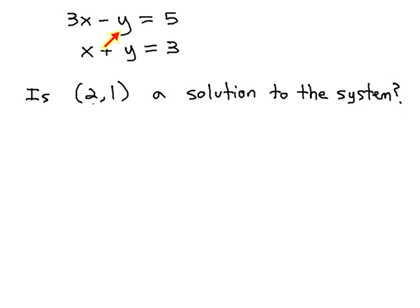So for example, if we wanted to see if (2,1) is the solution or the pair of numbers that makes both of these equations true, we can check that by plugging these values into the equations. The important thing is it must work for both equations for this to be a solution to the entire system.